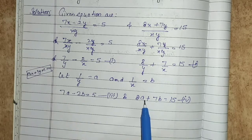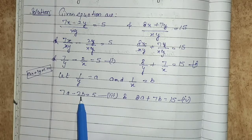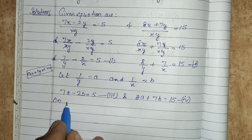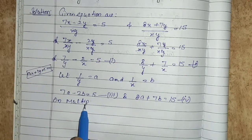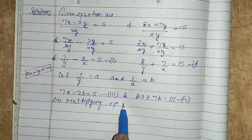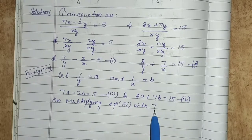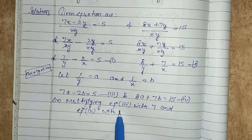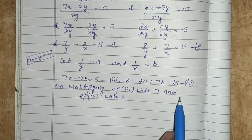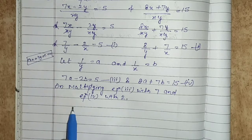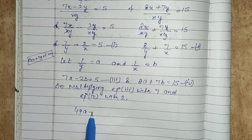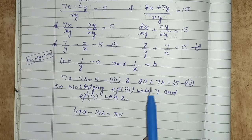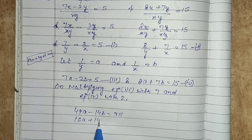To eliminate b, we multiply equation 3 by 7 and equation 4 by 2. Multiplying equation 3 by 7 gives 49a minus 14b equals to 35. Multiplying equation 4 by 2 gives 16a plus 14b equals to 30.